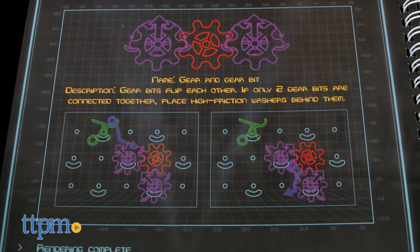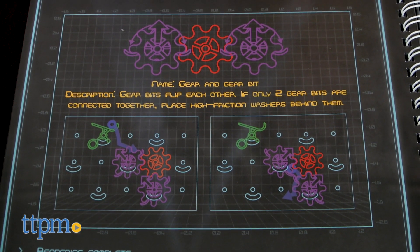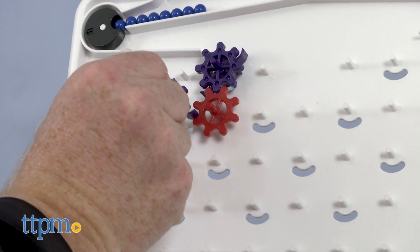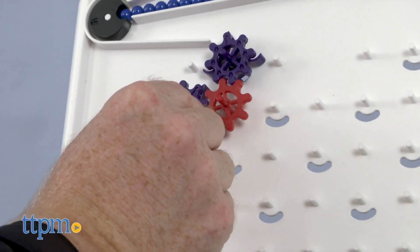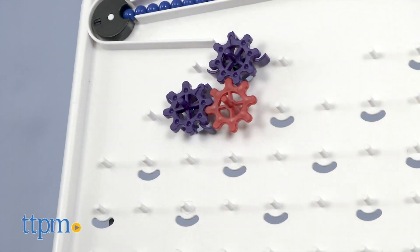The gear bit stores information by pointing right or left, but when the gear bit is flipped, it also turns other gear bits connected to it by gears.